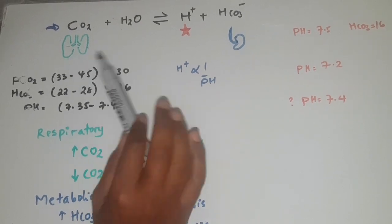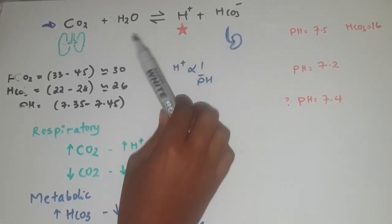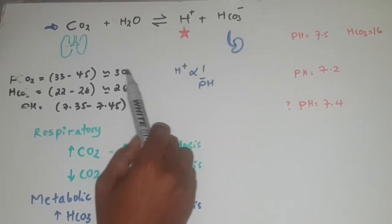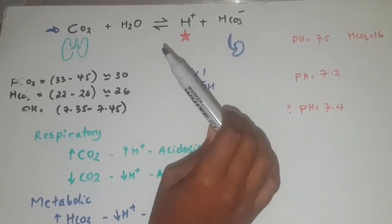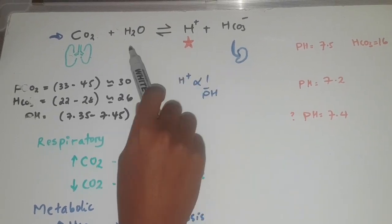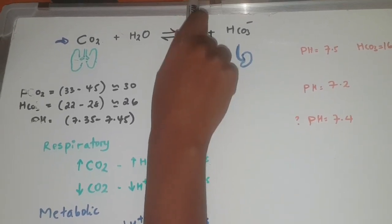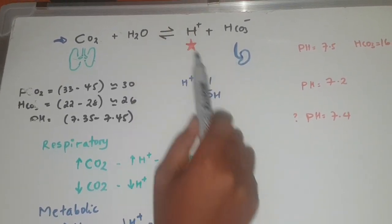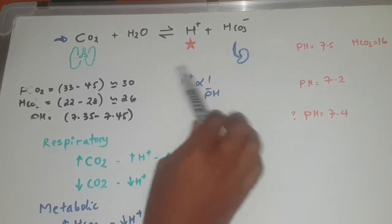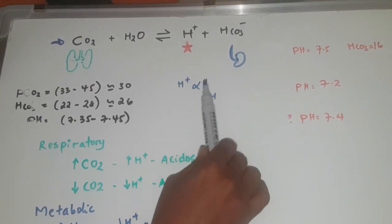Normally we consider whether the state is acidotic or alkalotic based on hydrogen ion concentration. Hydrogen is a key product, so we have to maintain the pH.